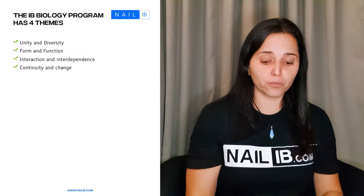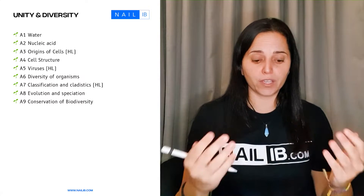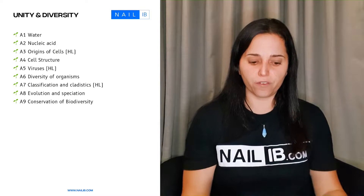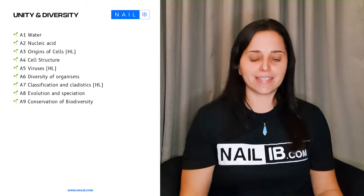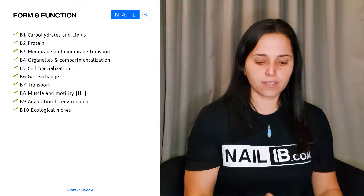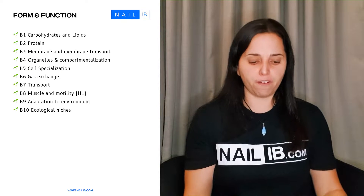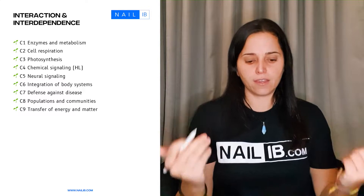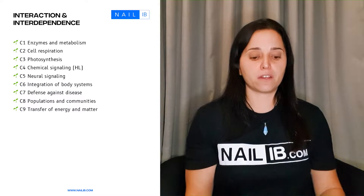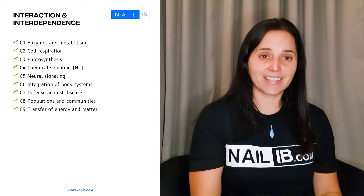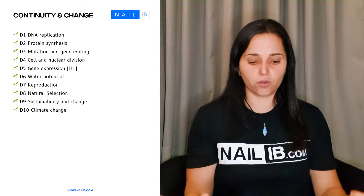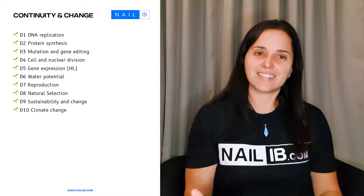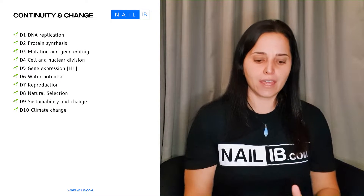We have already gone through it, showing you here unity and diversity with its nine sections, form and function with its ten sections, interaction and independence with its nine sections, and community and change with its ten sections.